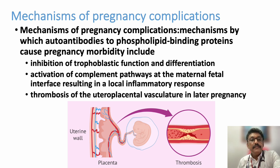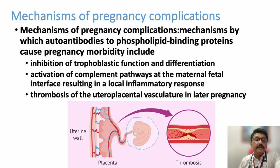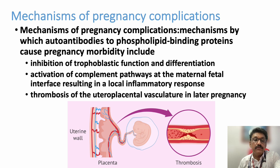The mechanism of pregnancy-related complications is due to antibodies to phospholipid-binding proteins that produce inhibition of trophoblastic function and differentiation. Activation of complement pathways at the maternal-fetal interface results in a local inflammatory response and thrombosis of the uteroplacental vasculature in later pregnancy. The main problem in pregnancy is obstruction of the uteroplacental blood vessels, leading to fetal death. Like thrombosis occurring everywhere in the body — arterial, venous, and microcirculation — patients develop thrombosis in the placental arteries.